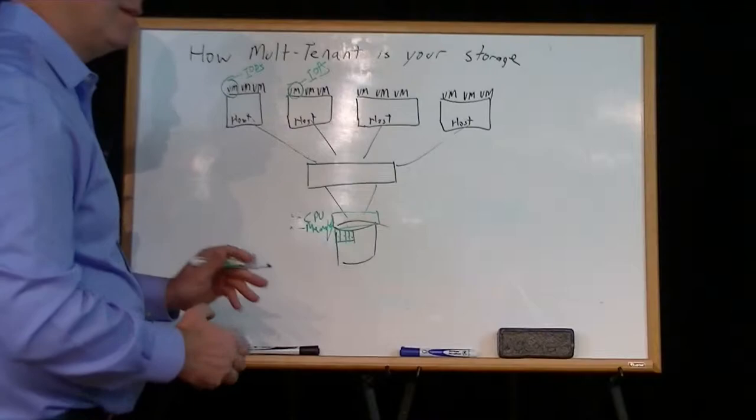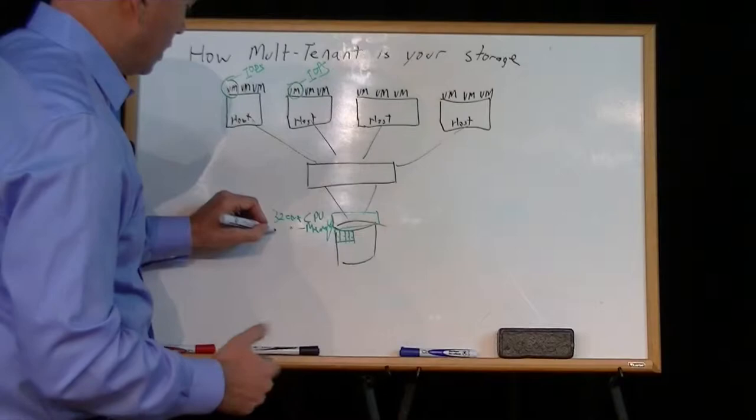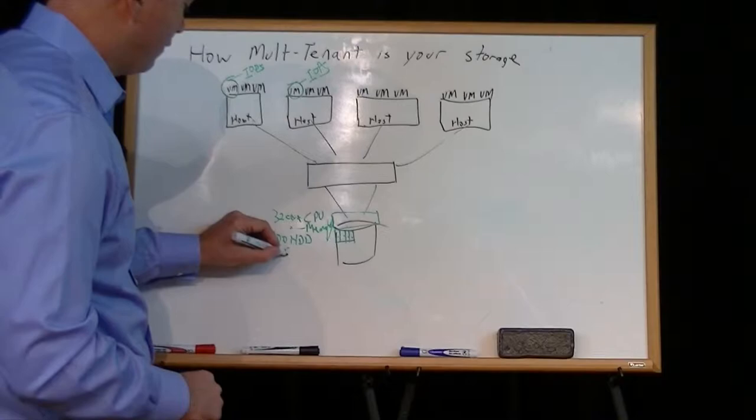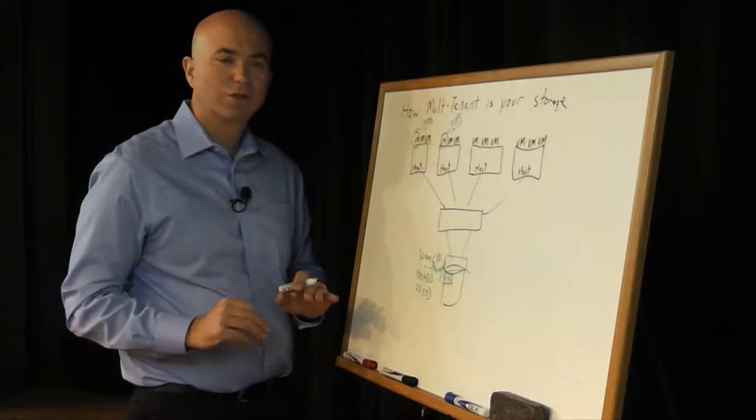So let's take that subscriber model. As a subscriber, let's say this is a 32 core system with 100 hard drives and 25 SSDs. So let's say I need to build a middle of the road sort of virtual machine. I need middle of the road storage performance.